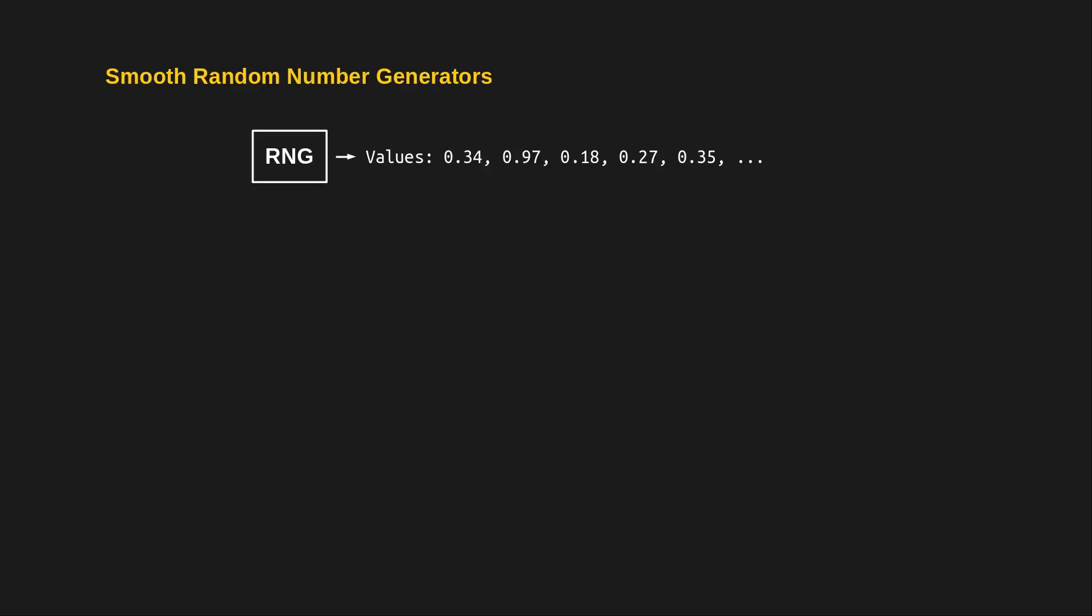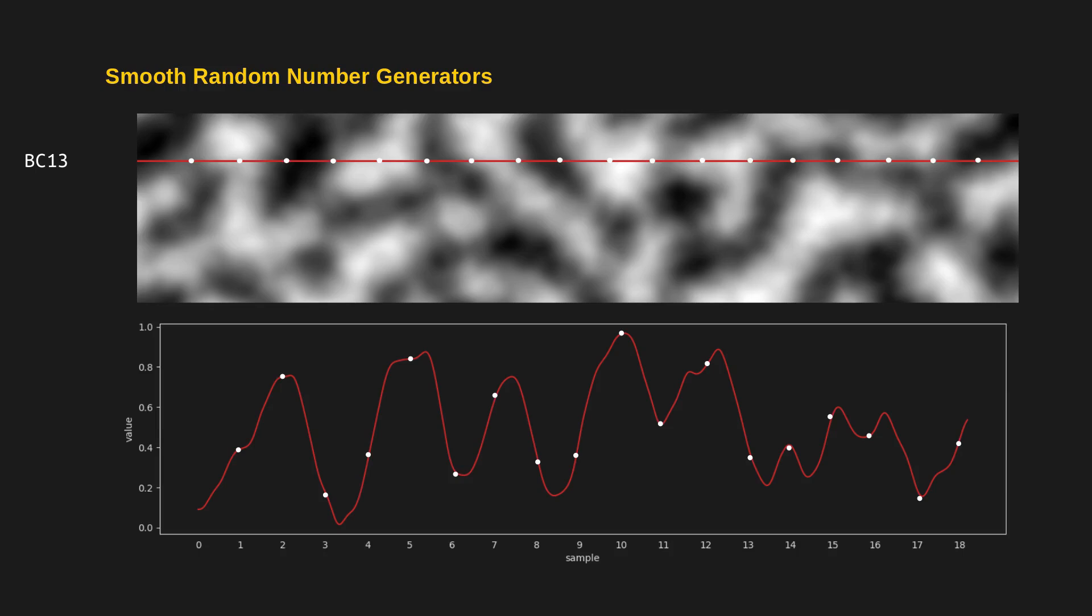I could solve this problem by using a traditional random number generator and then using the genes as seed values. The problem here is that changing this gene slightly would result in an entirely different random number sequence, which would break the continuity. Instead, we can use a smooth 2D noise function and let the gene decide which horizontal line we're looking at. Then, we can sample equidistant points along that line, which act as our random numbers. If we plot all the values along that red line in a 2D graph, you can see how our random numbers vary between 0 and 1.